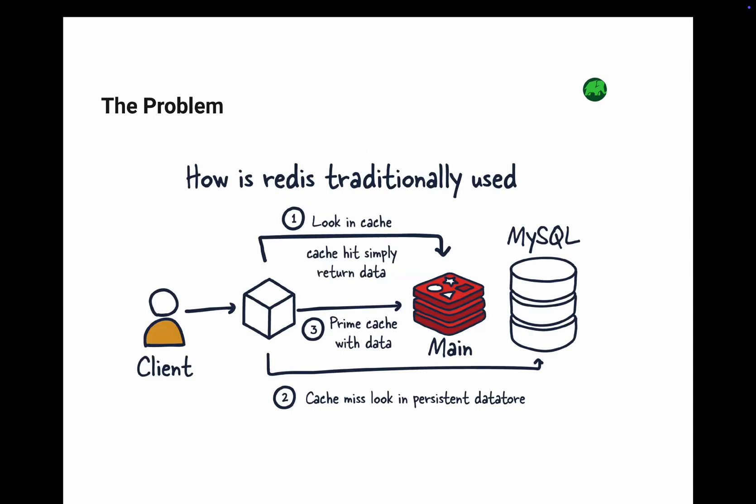Imagine your app receives thousands of requests every second. Each one has to query a database, sometimes for the same piece of data. The result: your database is overwhelmed and responses are delayed. Traditional data retrieval methods rely heavily on persistent data stores like MySQL. While these databases are reliable, they are not designed to handle repeated queries for frequently accessed data at high speeds. This creates what we call the bottleneck problem.